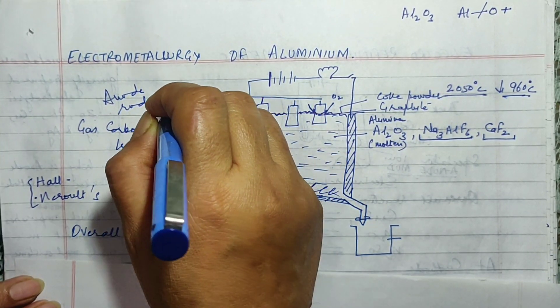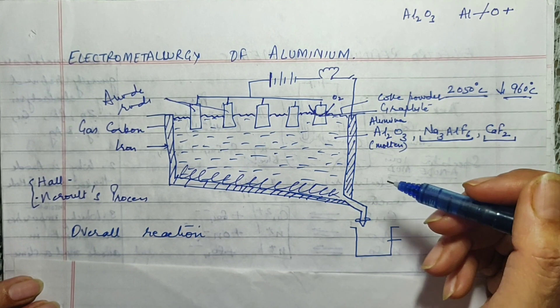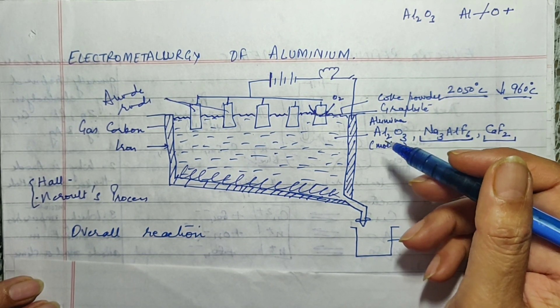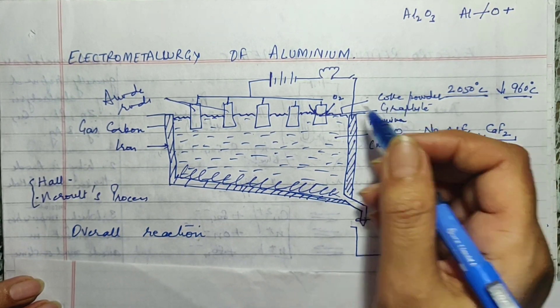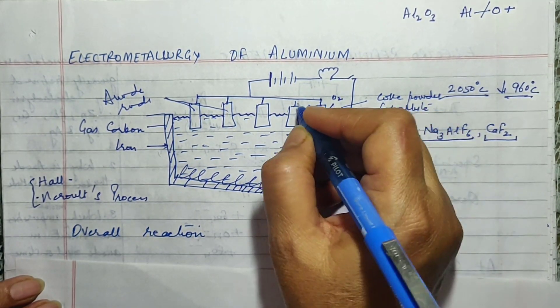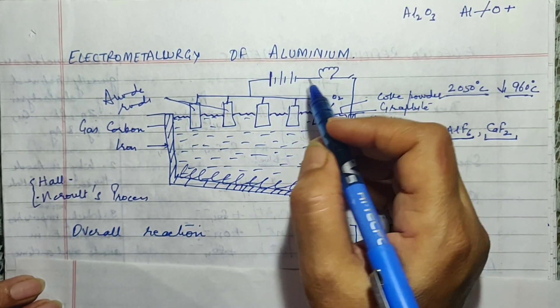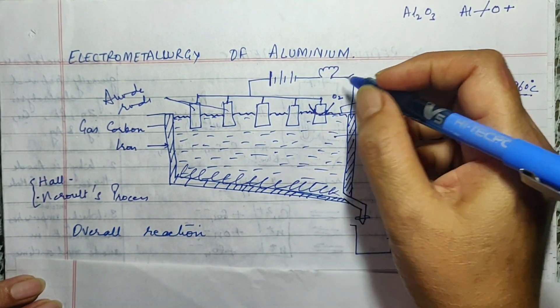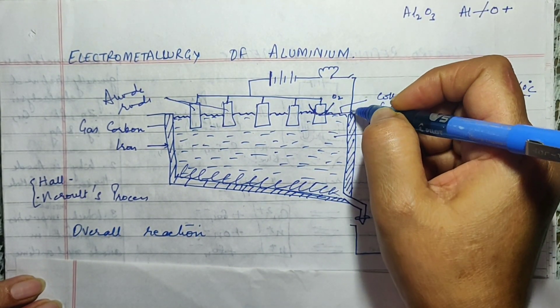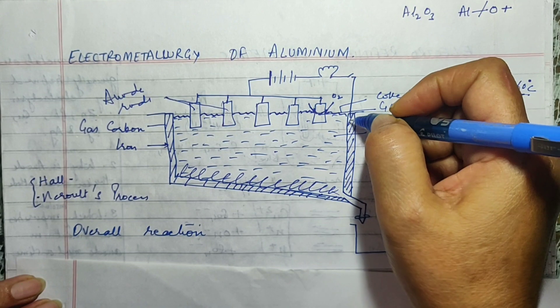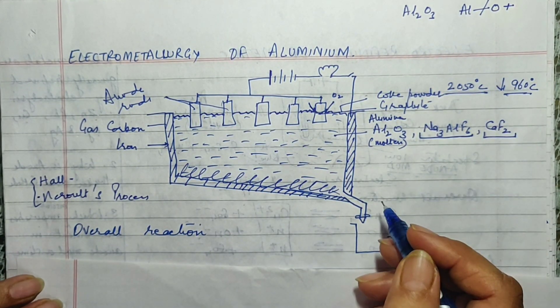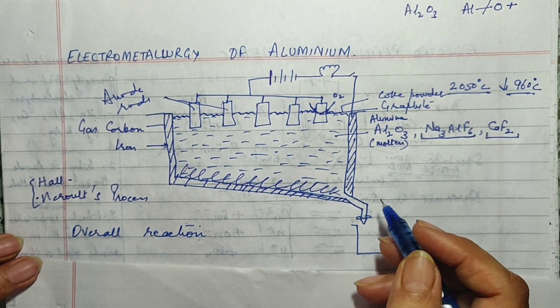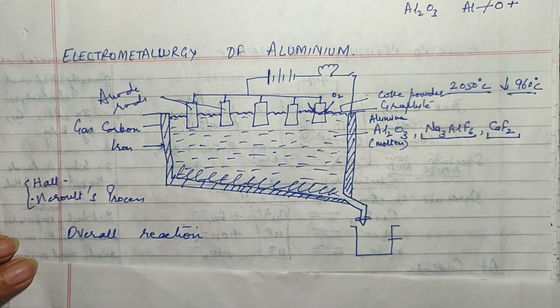Now why do we take so many because as the process will go on you will understand that these anode rods are later on used up. So in order to prolong the reaction for a little more time a number of anode rods are taken. Now in between we have a bulb also and then there is a key and then the negative terminal of the battery is connected to the lining of the electrolytic cell which is made up of gas carbon as I told you. So this was regarding the arrangement.